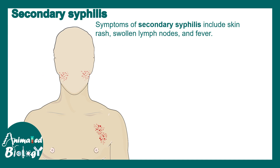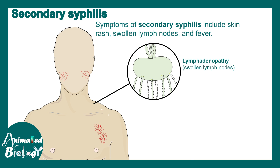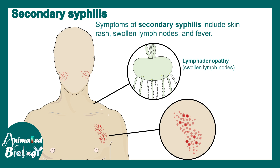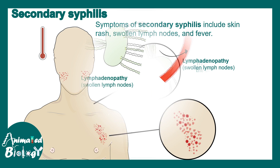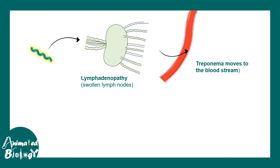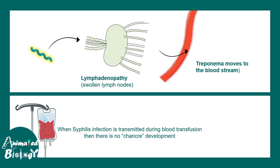In the secondary stage of syphilis, many types of rashes develop throughout the body, along with fever and swollen lymph nodes appearing in different regions. At this point, Treponema moves to the lymph nodes causing swelling, known as lymphadenopathy. Eventually, Treponema can also reach the bloodstream and cause a systemic-level response. Sometimes, syphilis infection can also be transmitted during blood transfusion, in which case things are non-canonical and chancre does not develop.